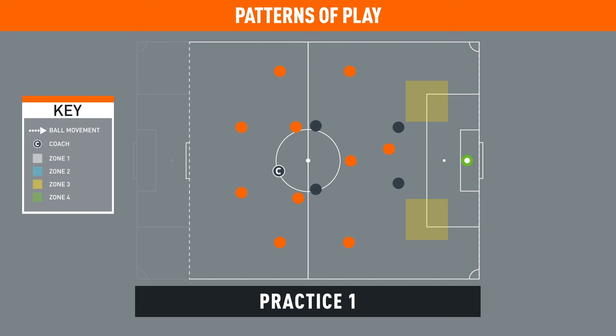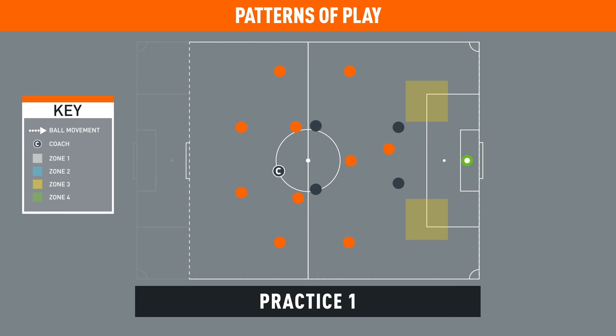When his team have possession high up the pitch in a wide position, Appleton coaches the number 10 to attempt to receive the ball in either of the boxes in zone 3 on the corners of the area. This movement gives the opposition central defender a decision to make — whether he follows and is drawn outside the width of the goal, or whether he holds his position, potentially allowing the number 10 to turn in the penalty area.